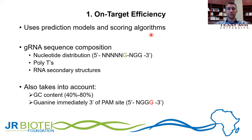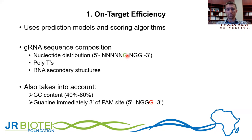On-target efficiency largely involves the use of prediction models and scoring algorithms. Researchers have used every possible guide for a handful of genes and looked for characteristics associated with highly effective guides. One key characteristic is guide RNA sequence composition — specifically nucleotide distribution. The position of certain nucleotides within the guide was favored over others. For example, when there was a G (guanine) immediately 5-prime of the NGG PAM site, this was associated with a much higher effective guide RNA.